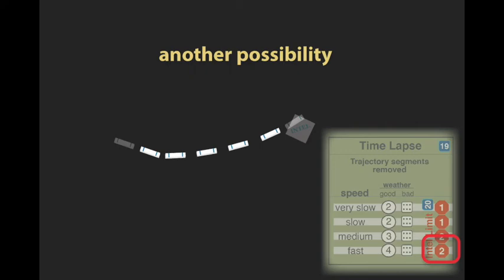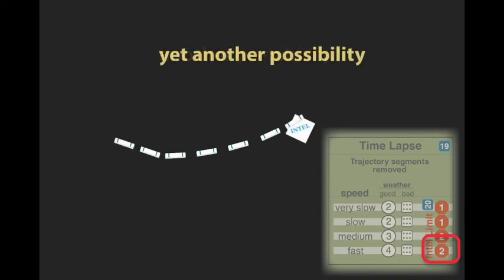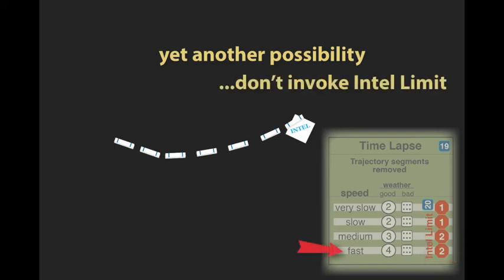When performing time-lapse and there is an intel marker attached to the trajectory, the player has a decision to make: either perform time-lapse without invoking intel limit, or invoke intel limit. If you invoke it, you will remove an intel marker; but if you don't, all intel markers will remain where they are and the segments they are attached to will not be removed.